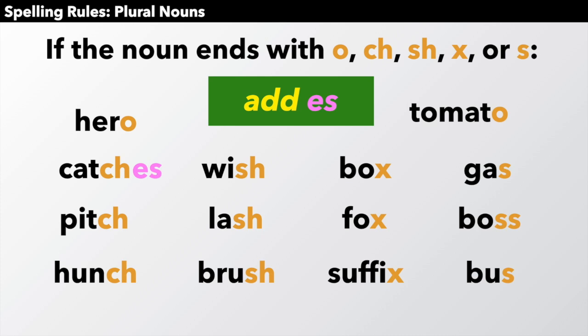Catches, pitches, hunches, wishes, lashes, brushes, boxes, suffixes, foxes, gases, bosses, buses, heroes, tomatoes. All of these endings, you change the s into an es and you add es to make it plural.